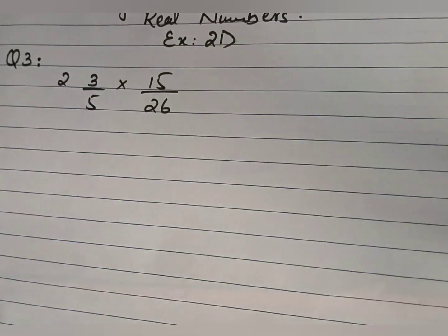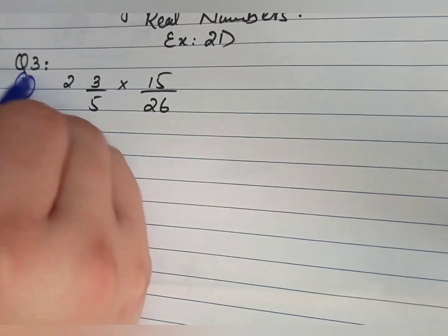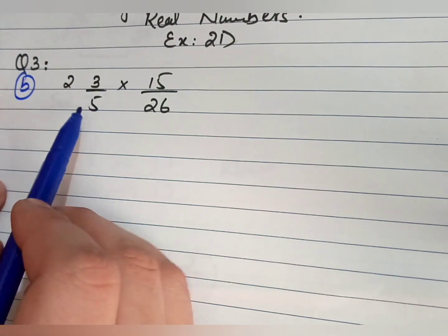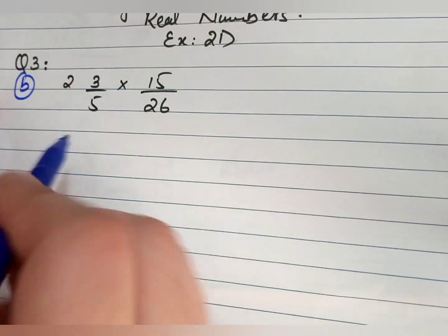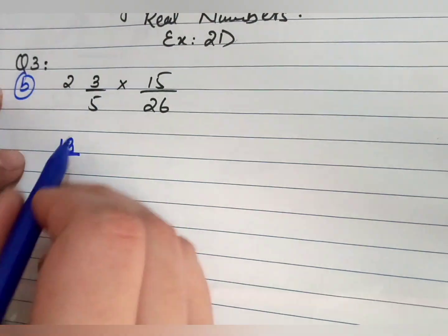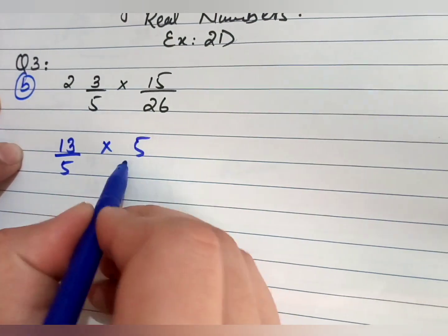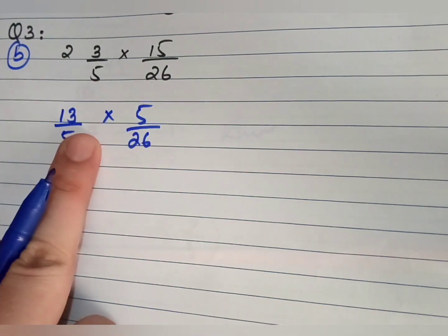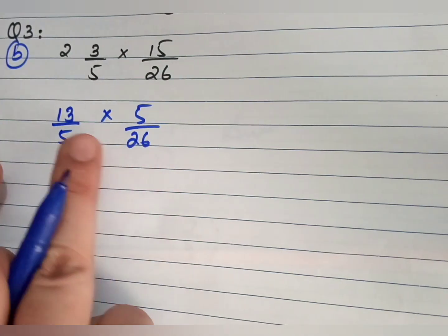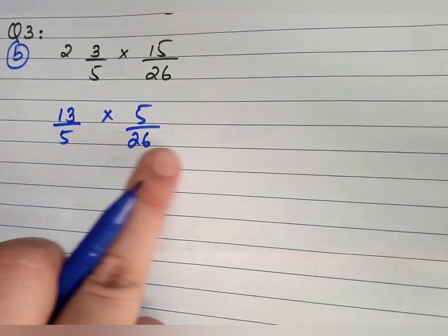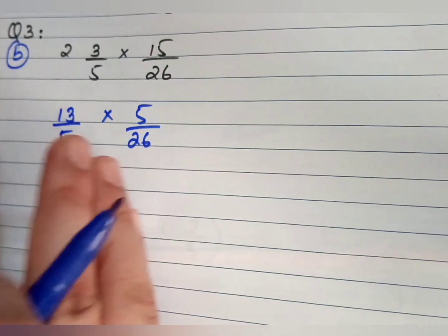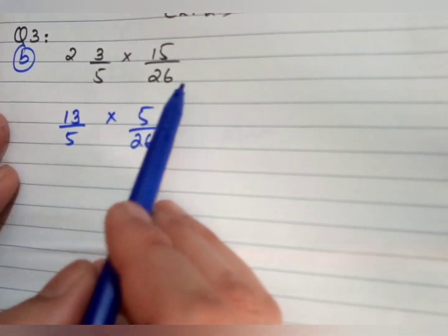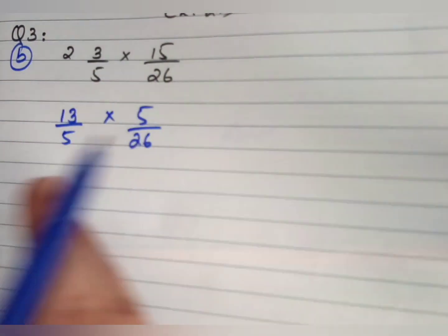Now for Part B of Question 3. First, convert the mixed fraction: 5 times 2 equals 10, plus 3 equals 13, so we get 13 over 10, divided by — wait, multiplied. Note: in the first question there was a plus or minus sign, so we take the LCM of the fractions. But whenever you have a multiplication sign, there is no need to take the LCM — just multiply the fractions directly.